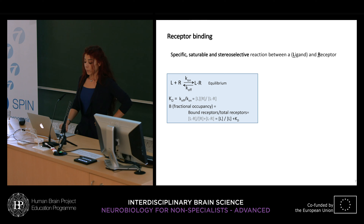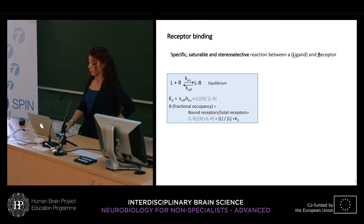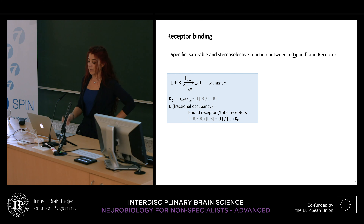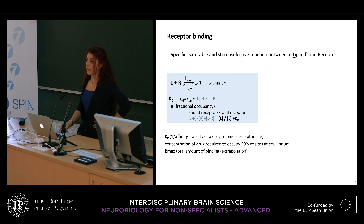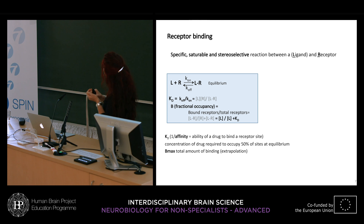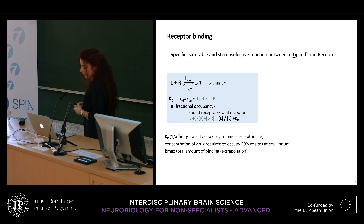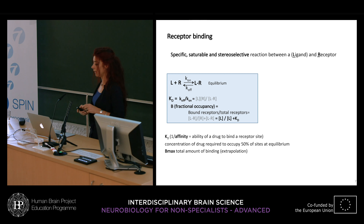Important parameters in the reaction are the K-D, the dissociation constant, which is the ratio of K-off to K-on, and the fractional occupancy, which is the amount of bound receptor relative to the total receptors present. In practical terms, the K-D is the inverse of affinity — the ability of a drug to bind a receptor site, defined as the concentration of drug required to occupy 50% of sites at equilibrium. The Bmax is the total amount of binding, usually found by extrapolation of the curves obtained in the receptor binding reaction.